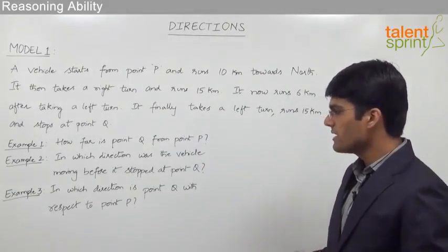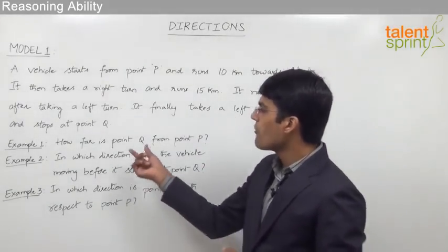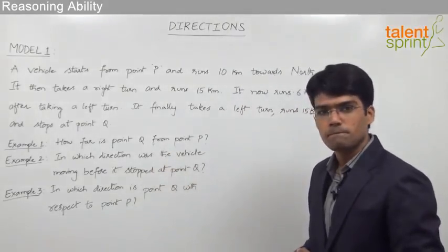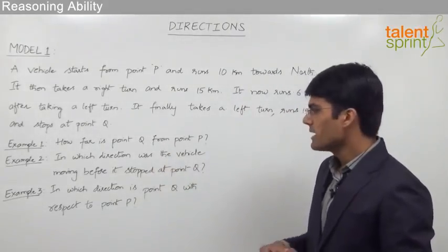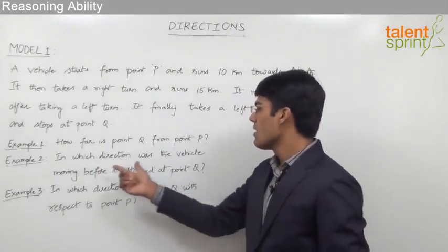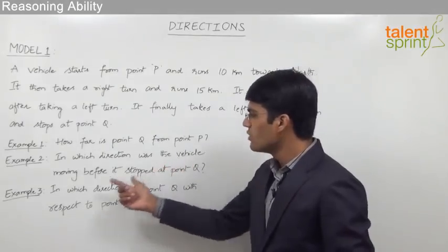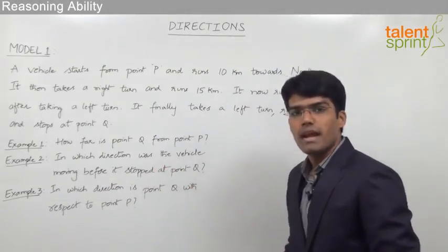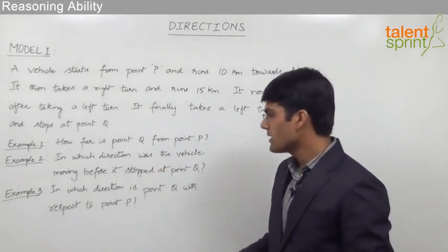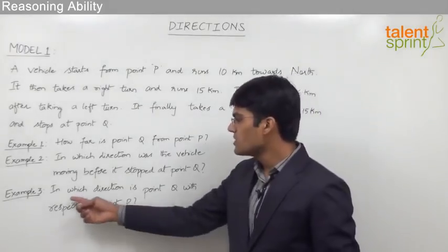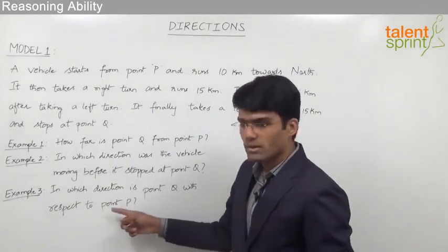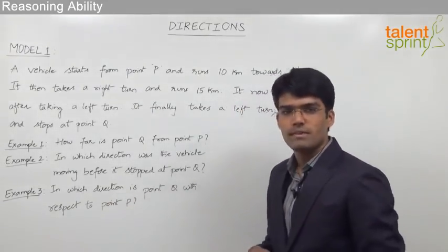Based on this movement we need to answer the following questions. The first question is how far is point Q from point P? The second question is in which direction was the vehicle moving before it stopped at point Q? And the last one is in which direction is point Q with respect to point P?